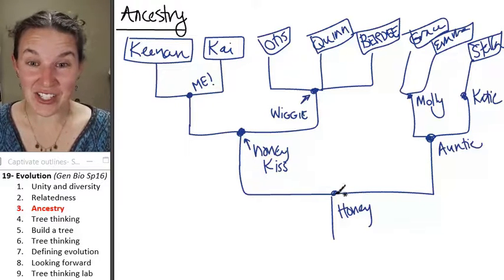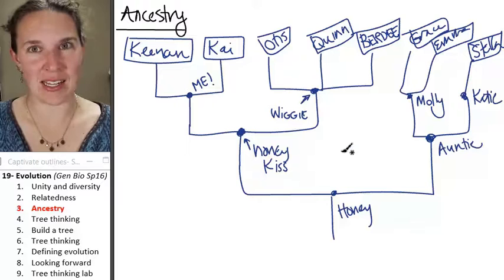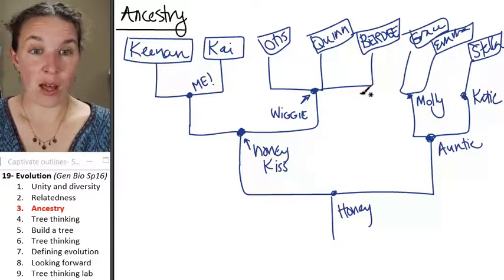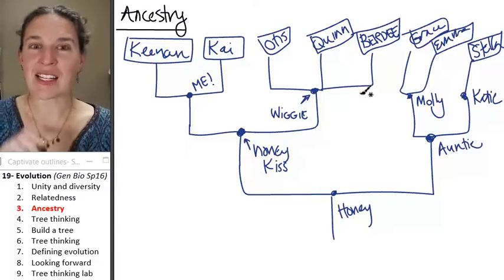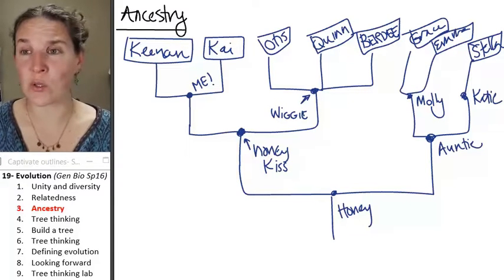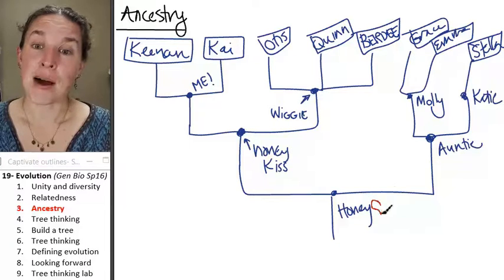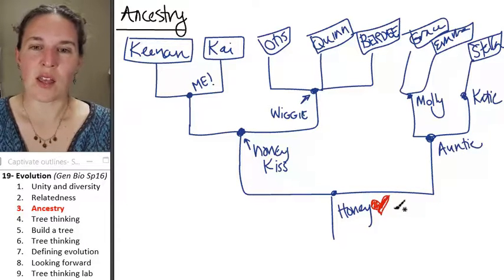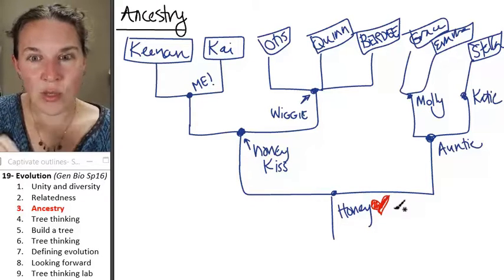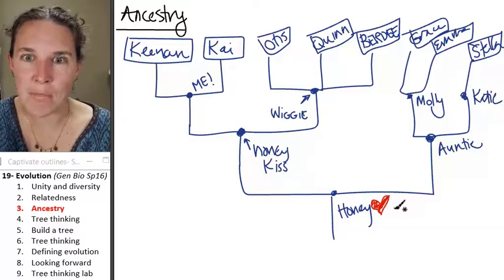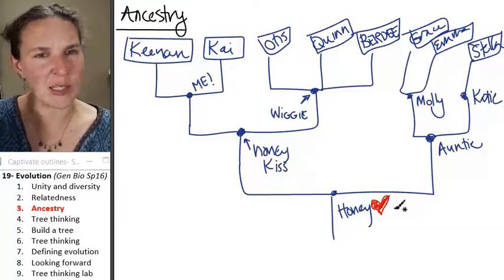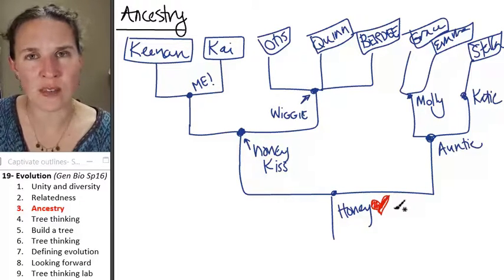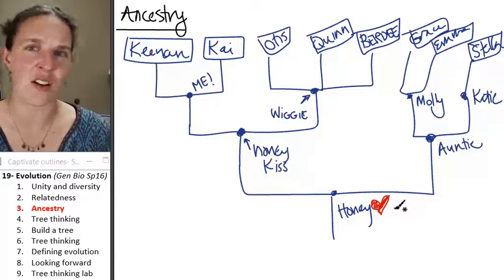Now, the ancestors, like I said, they usually aren't alive anymore. And in fact, if you looked at this tree, who's the oldest person on the tree? My honey, and my honey isn't alive anymore. So the farther down you go, like if we mapped her mom and her siblings, then we would have even farther back in the tree, longer ago ancestors, and they're not around anymore.